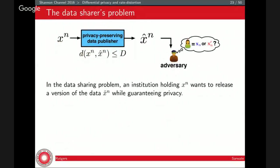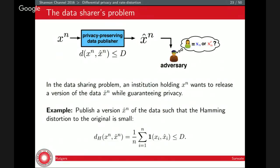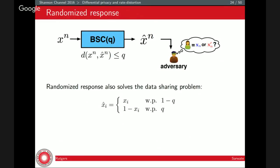This actually corresponds to a practical problem: the person who has to share a version of their data. If I have n records, I have to share n records. I can't share some model of my n records. The institution holding X^n wants to release a version x-hat while guaranteeing privacy, and that output is observed by an adversary trying to figure out any individual's value. For example, I might want to publish a version x-hat^n such that the Hamming distortion to the original is small — that's the utility guarantee. Randomized response also solves the data sharing problem: just shove data through a channel.